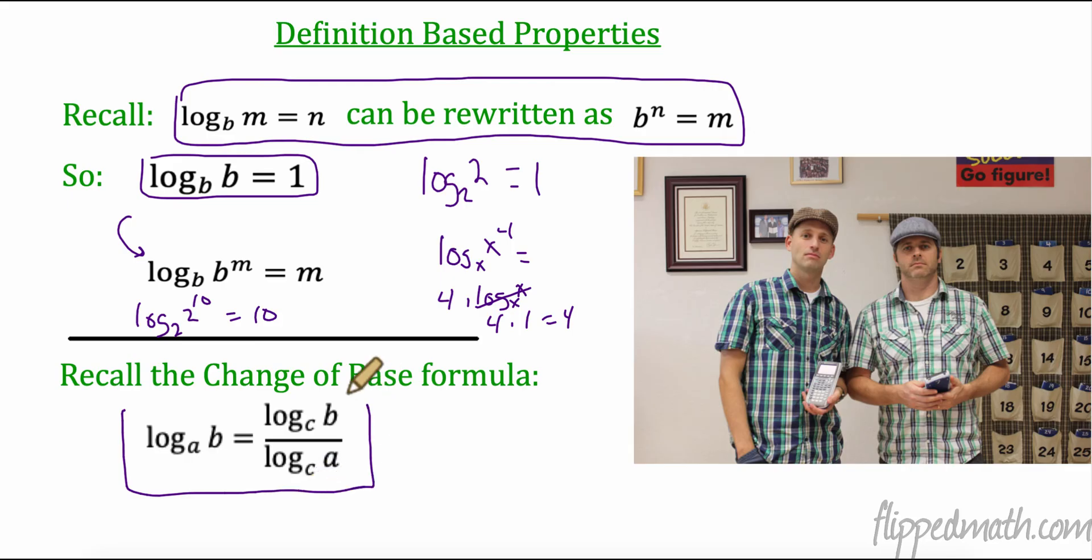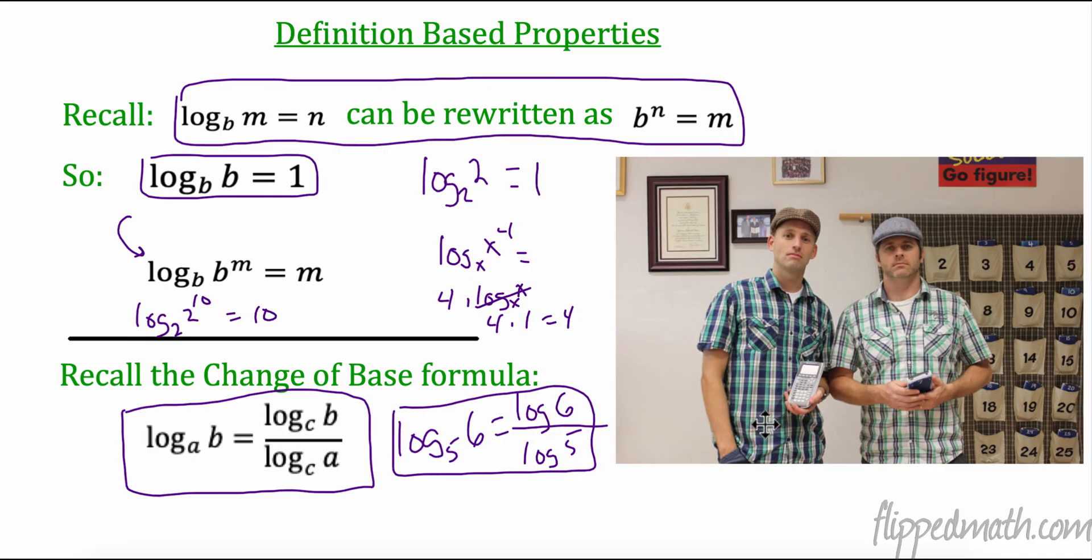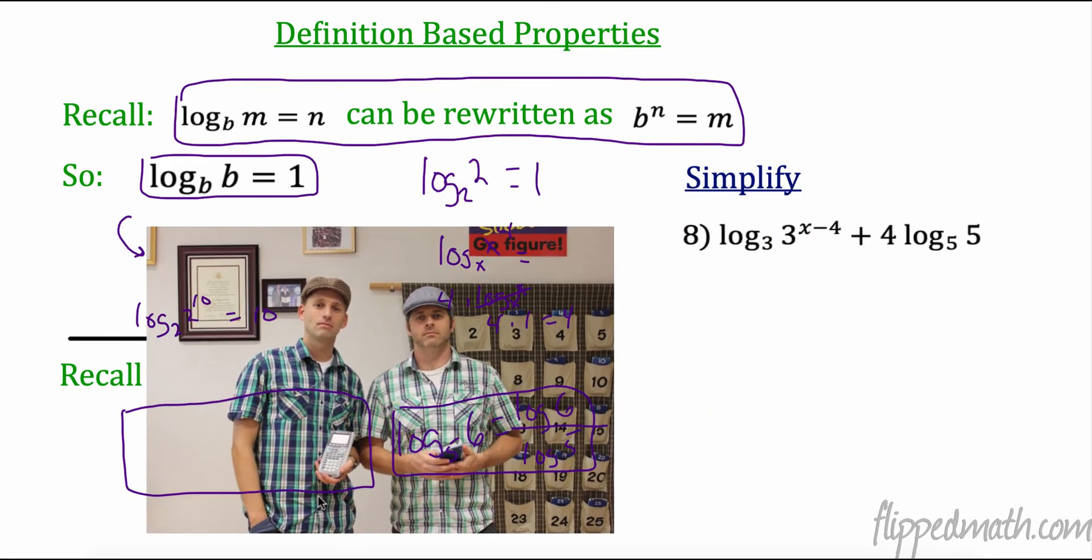And last but not least, we talked about the change of base formula. So if I had log of 5 of 6, I could change that to any base I want. Now, most of the time, we change this to base 10 because that's the one we can put in our calculator the easiest. So that goes on top - log base 10 of 6 divided by log base 10 of 5. So that's the change of base formula. So sometimes you work together so long, you just start looking the same. Being impressed and work together for a while, they look the same. Is that a blue-green shirt or a green-blue? I can't tell.